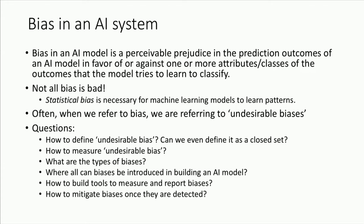Bias in an AI model is a perceivable prejudice in the prediction outcomes, either in favor or against a specific set of attributes. But bias by itself is not bad — statistically, data needs some bias for the model to actually learn patterns. When we say bias in an AI model, we're typically talking about undesirable bias. So how do you define it, how do you measure it, what types are there, and where in the pipeline can they be introduced? It's very important to understand the people and pipeline steps involved.